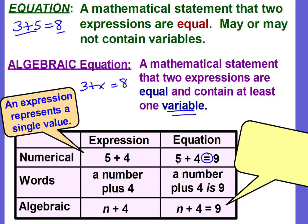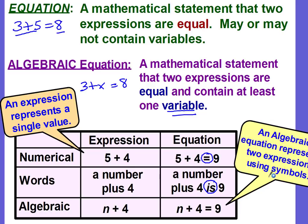When you look at the equations, the numerical tells you what it equals: 5 plus 4 equals 9. A number plus 4 is 9. 'Is' is one of those clue words that means equal.